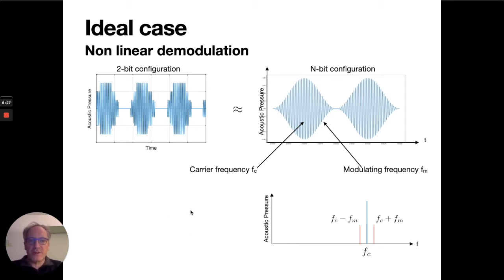Here we deal with a 4-bit quantized signal, but an operational system will work with a higher number of bits. Under these conditions, the signal picked up at the focal point corresponds to an ultrasonic carrier of frequency fc modulated in amplitude by a sinusoidal signal of frequency fm.